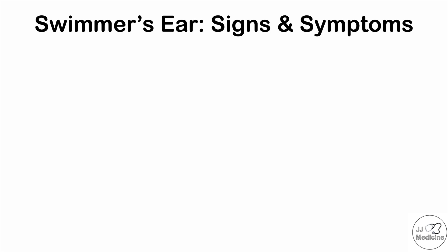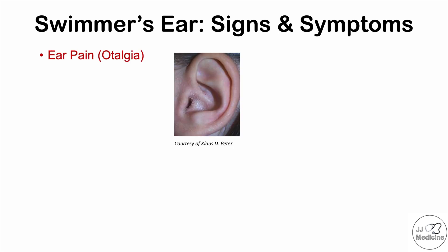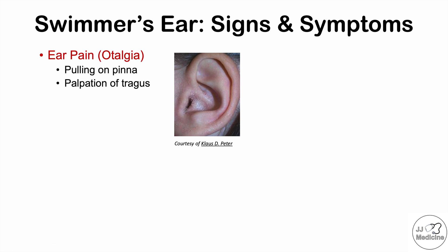Now let's talk about the signs and symptoms of swimmer's ear. One of the most common symptoms is ear pain, or otalgia. This can be elicited by pulling on the pinna — the ear flap — or by palpating or pushing on the tragus. Pushing in on the tragus can elicit pain. The severity of pain can vary from very mild to severe.